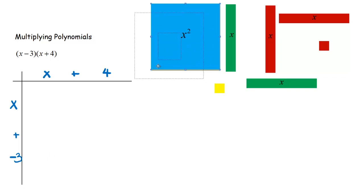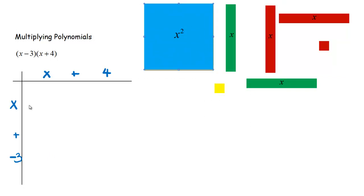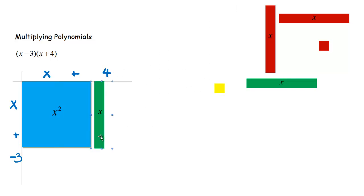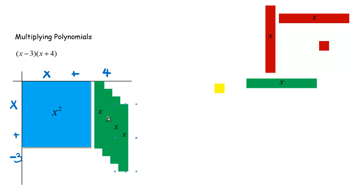So there's the big blue x squared tile — x times x is x squared, so he goes right there. Then x times four: we need four x tiles, so let's grab them — one, two, three, and four — and line them up so they fit nicely.